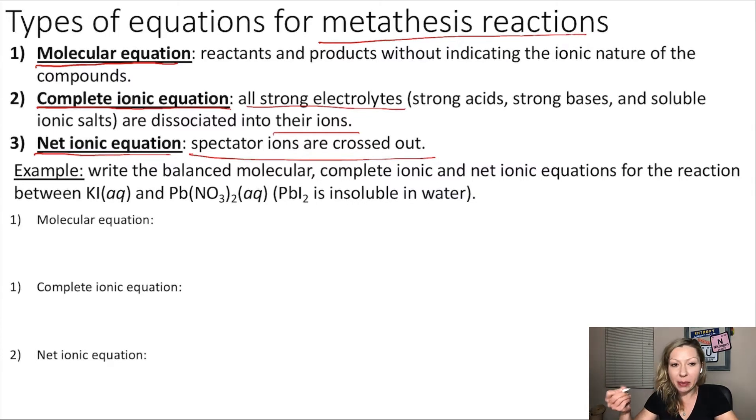So let's do an example. Let's write the balanced molecular, complete ionic, and net ionic equations for the reaction between potassium iodide and lead nitrate. This is a precipitation reaction. We are going to form lead iodide as our product, which is insoluble in water.